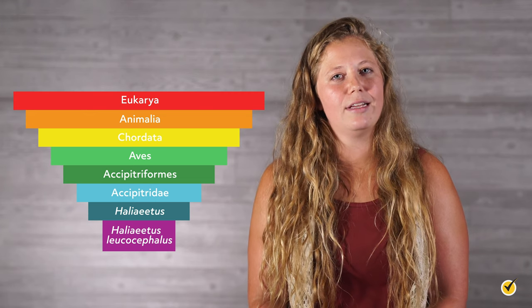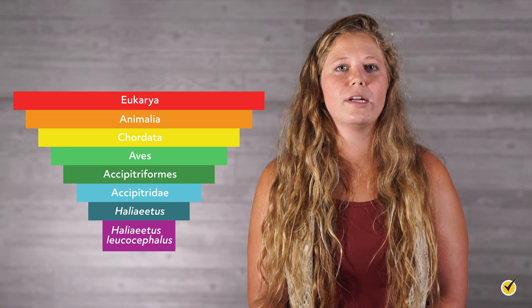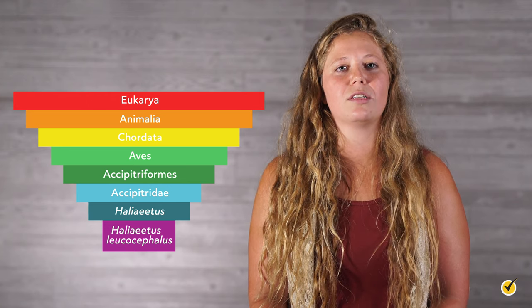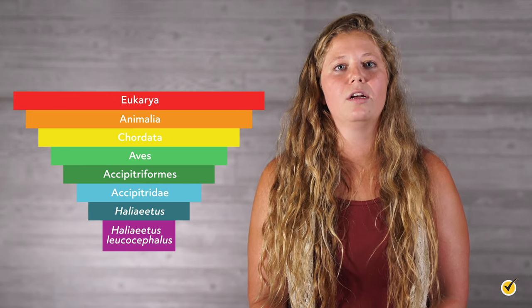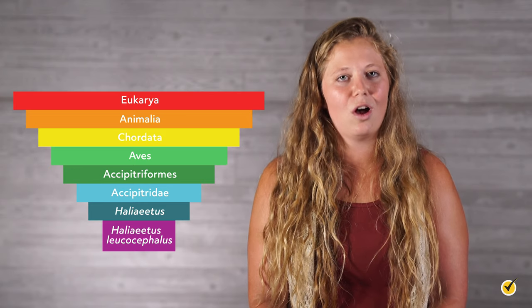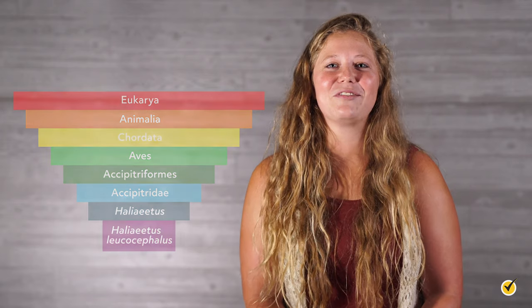Even though it seems redundant, the technical way to refer to the species of an organism is with the binomial nomenclature we talked about earlier. Just like the genus level, the species level is also italicized. We can do this for all living things like oak trees, cyanobacteria, and even your cat that's curled up next to you on the couch.